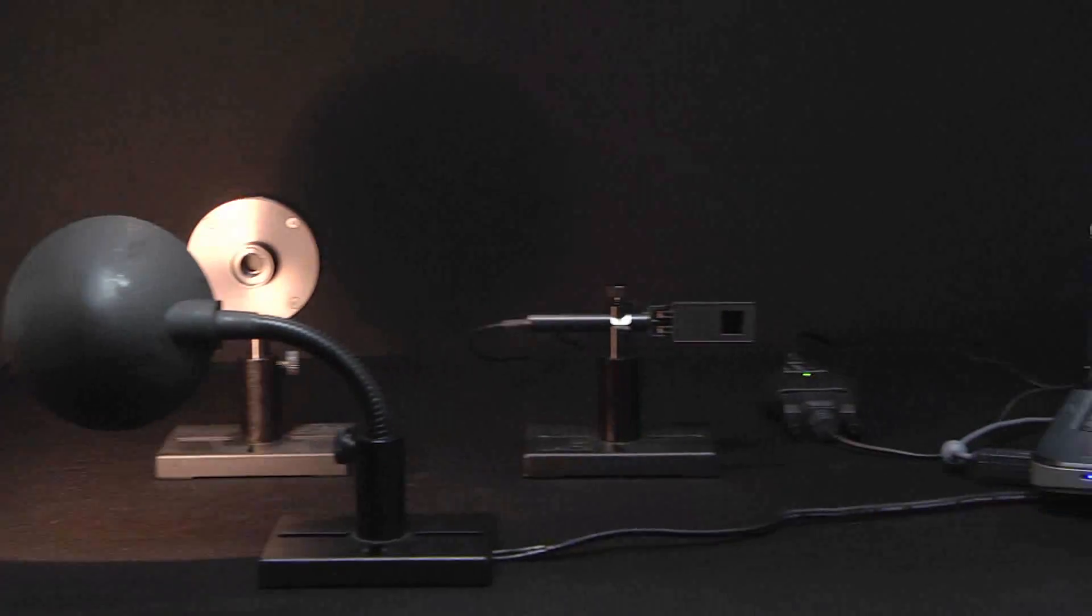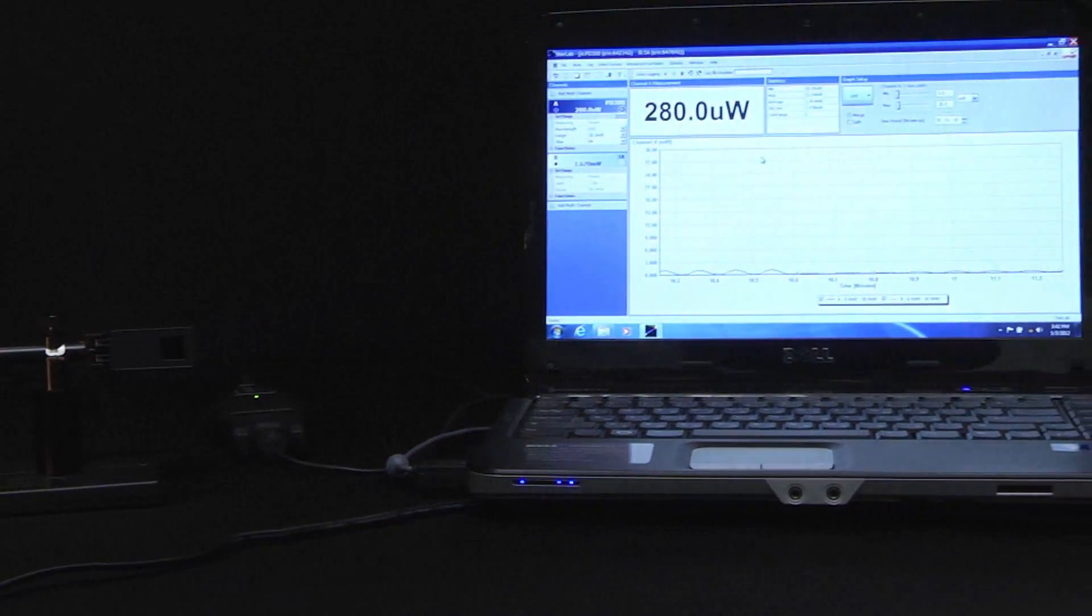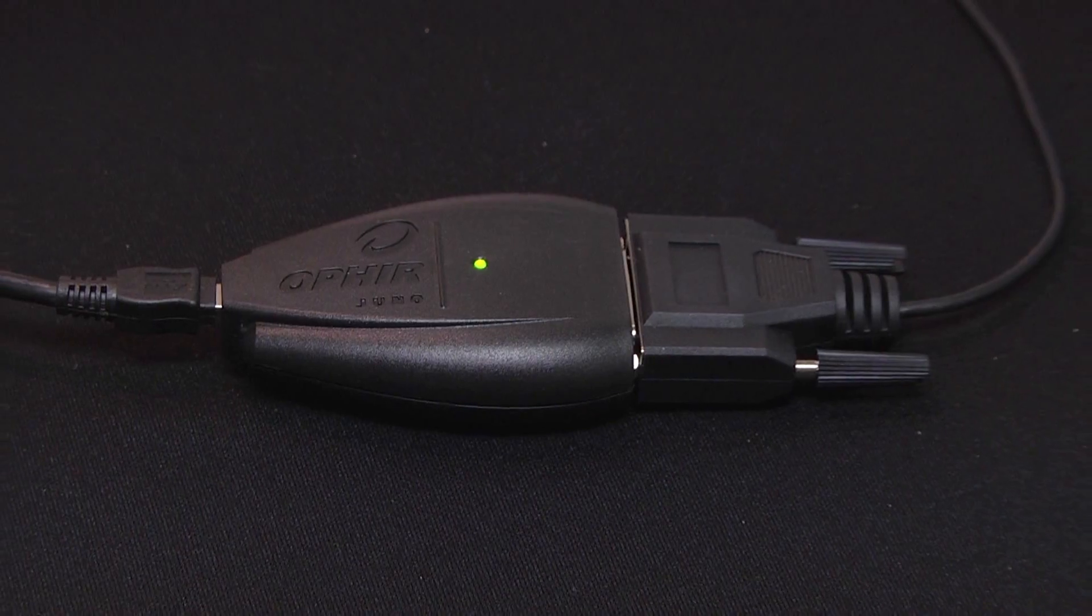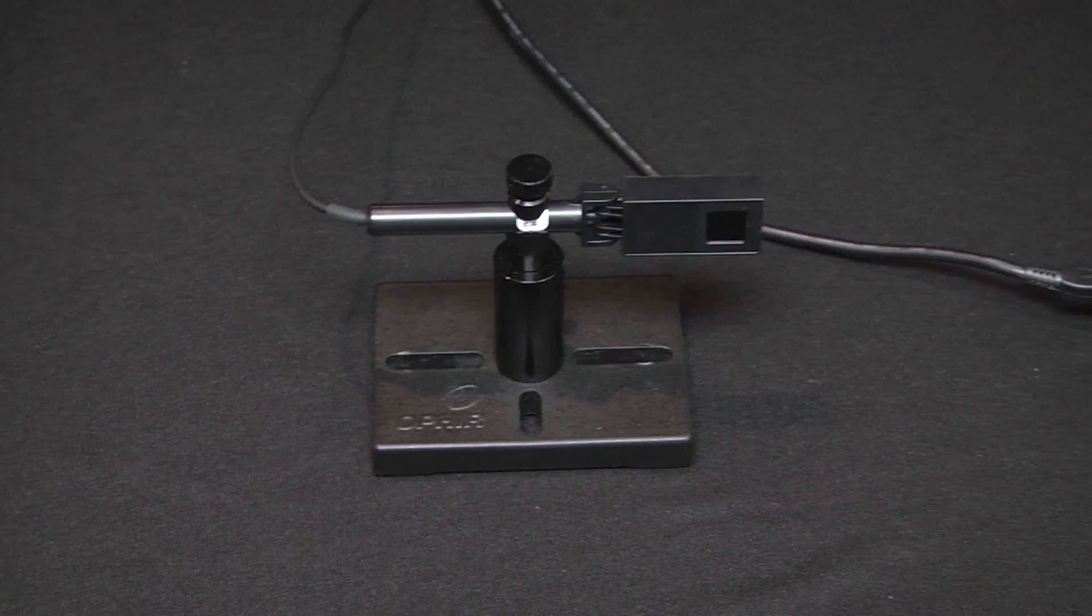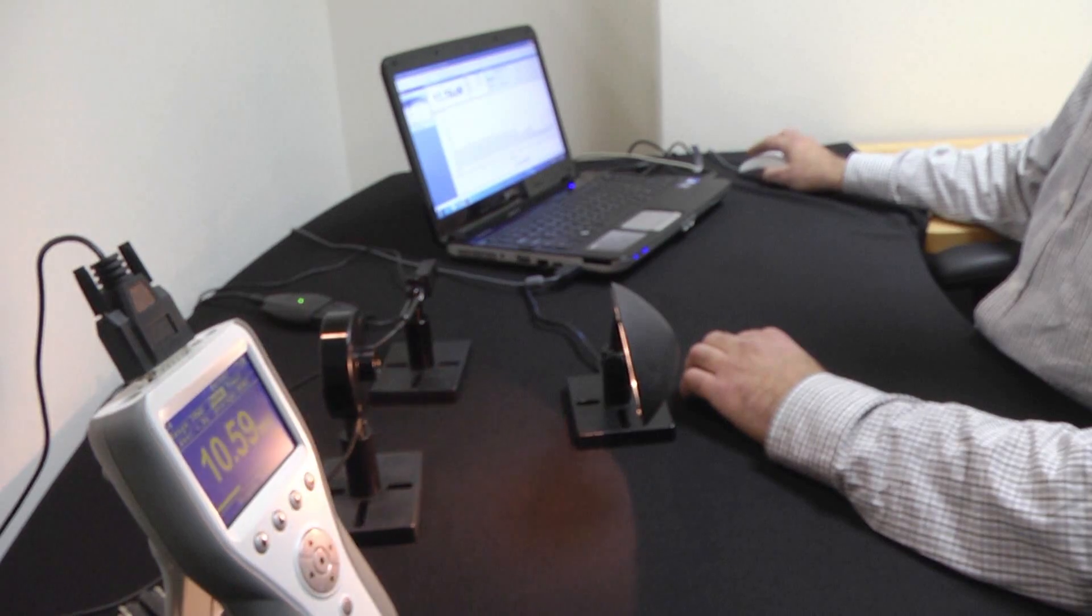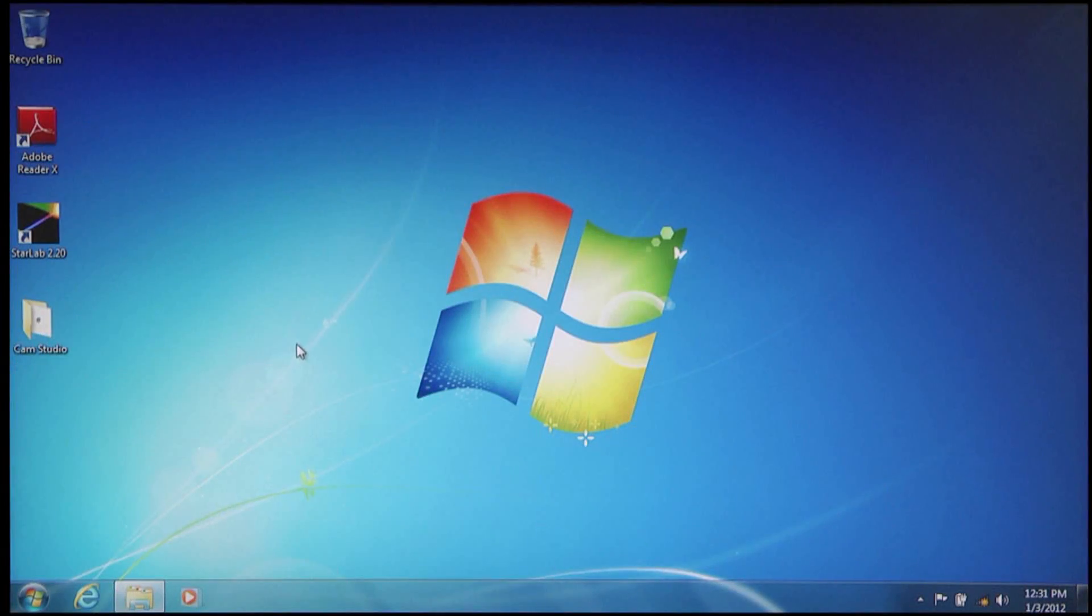And here we have a PD300 photodiode sensor connected via our Juno PC interface and USB cable to our PC. Now that we are connected to the PC, let's open the Starlab software.